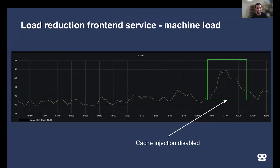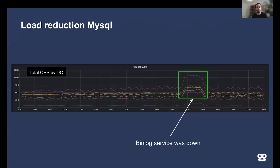There was also a short period where we had a downtime of our binlog service. The graph shows the total queries per second on our front-end databases. As you can see, when the binlog service is down, the amount of queries going to the front-end databases increases significantly. So we're not only saving huge load on each machine that serves front-end requests — we're also saving a lot of load on the front-end database machines.